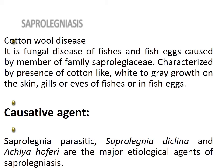Saprolegniasis, also known as cotton wool disease, is a fungal disease of fish and fish eggs caused by members of the family Saprolegniaceae, including the fungus Achlya. It is characterized by the presence of cotton-like white to grey growth on the skin, gills, or eyes of fish or on fish eggs. The causative agents are Saprolegnia parasitica, Saprolegnia diclina, and Achlya hoferi.